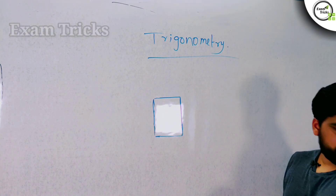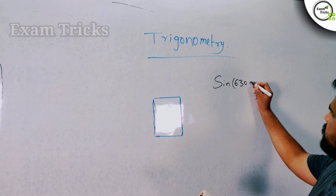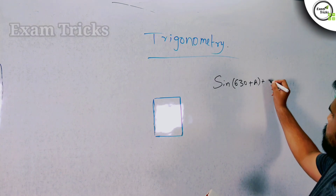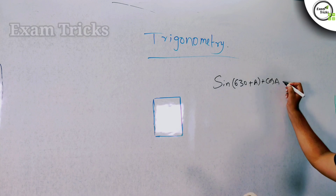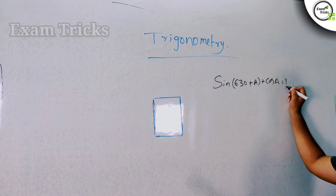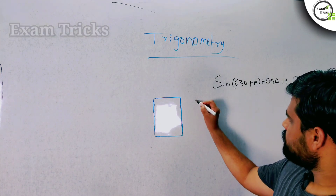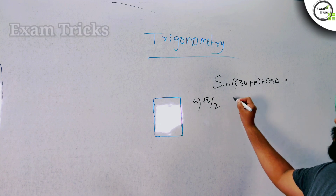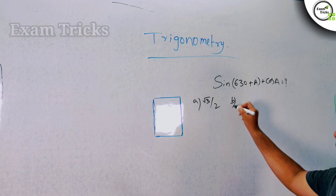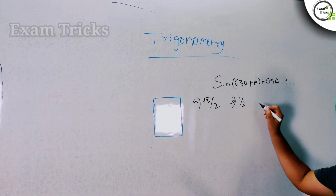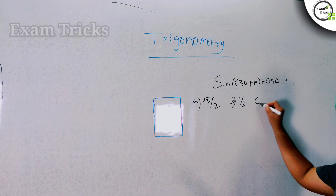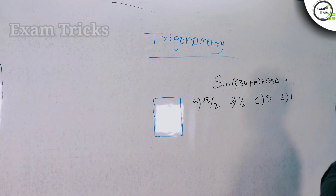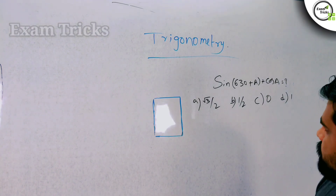Our first question is: sin(630 + A) plus cos(A) is equal to what? The options are: (a) root 3 by 2, (b) 1 by 2, (c) 0, (d) 1. Choose the correct option.